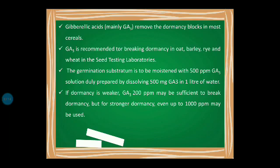Gibberellic acid, mainly GA3, also removes the dormancy blocks in most cereals. GA3 is recommended for breaking dormancy in oat, barley, rye and wheat in seed testing laboratories — particularly in India. The germination substratum is moistened with 500 ppm of GA3 solution, duly prepared by dissolving 500 milligrams of GA3 in one liter of water.